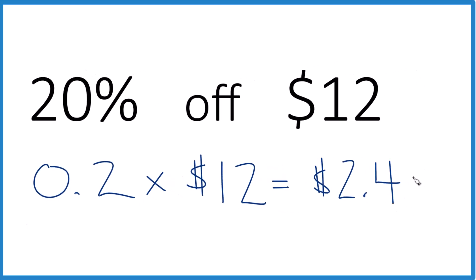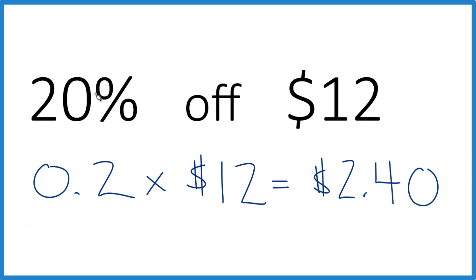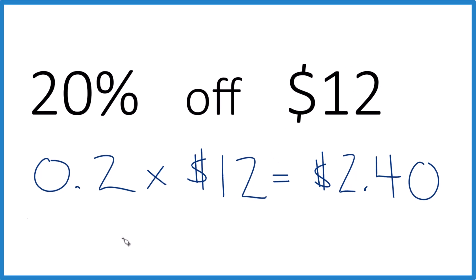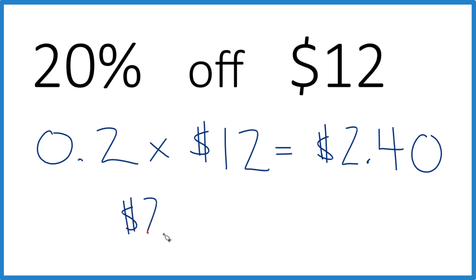That's the math way, because percent means per 100 — 20 over 100. If I'm thinking about it in the store, though, I probably would say: if I have $12, I know 20% of $10 is $2. And then 20% of $1 would be 20 cents, but I have $2.